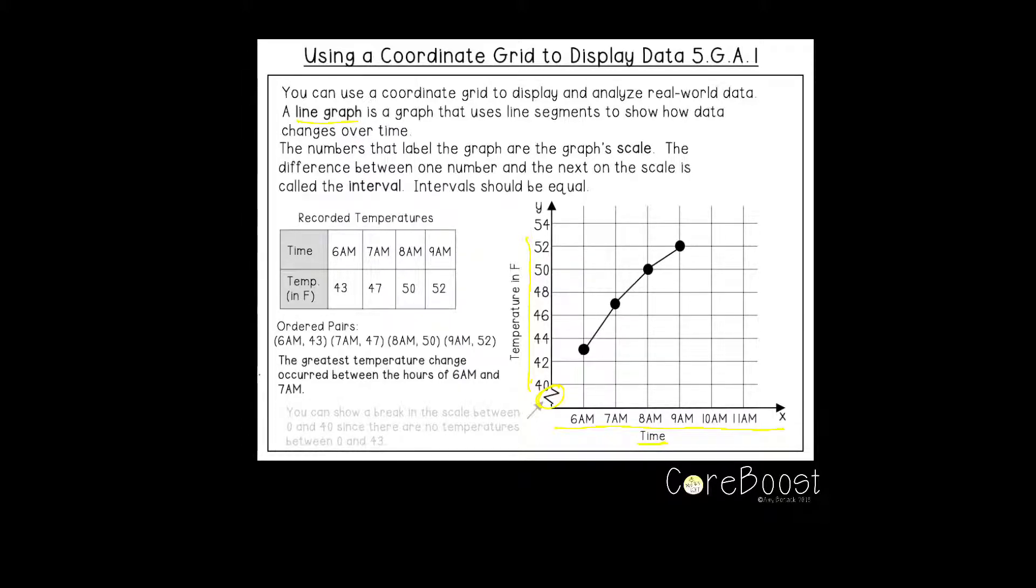The interval along our y axis is an interval of 2 degrees. So each number goes up by 2. And we've labeled the y axis as temperature in Fahrenheit.